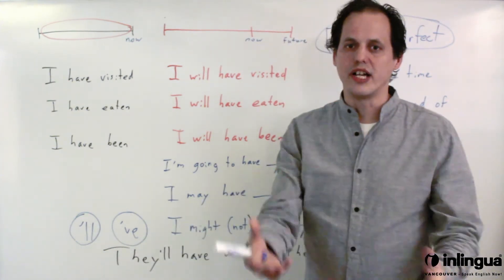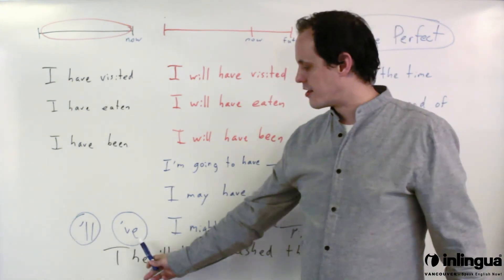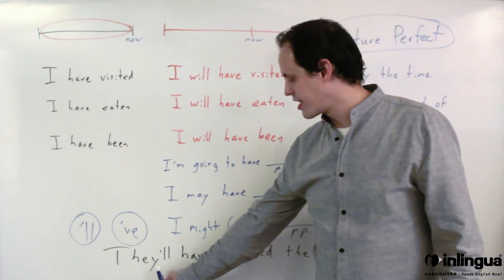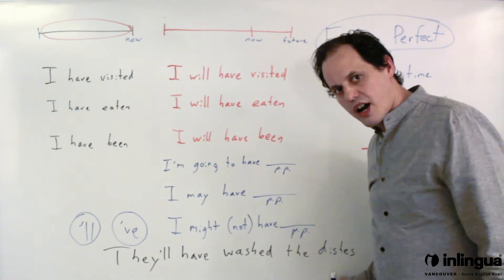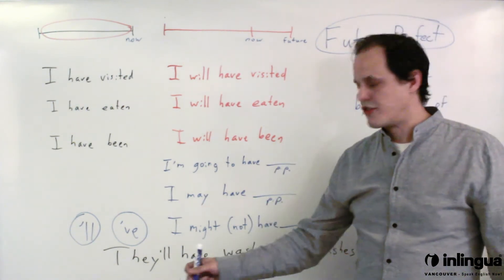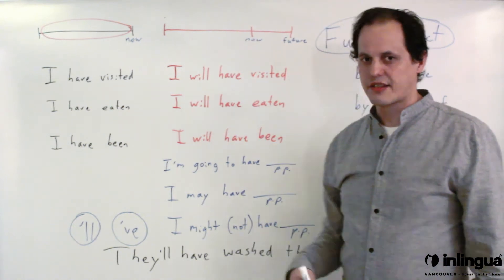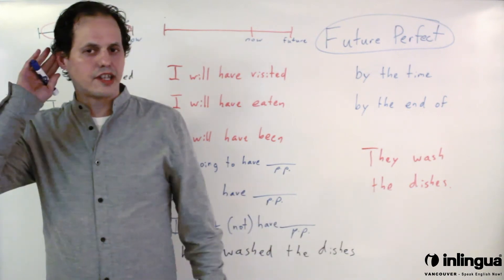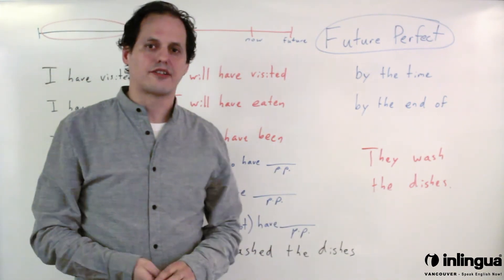but when they do they tend to use contractions. Instead of saying will, we'll just say 'll, or instead of have, we'll shorten it to 've. And so a sentence like this one, they'll have washed the dishes, right? If you're missing these little sounds it might sound to you like they wash the dishes. But if you're listening carefully you can hear those contractions.